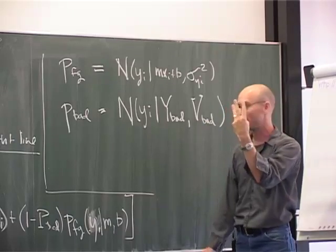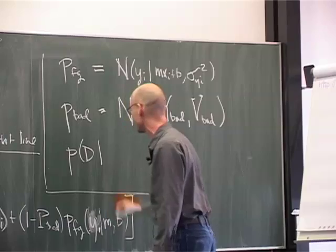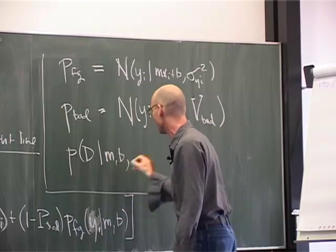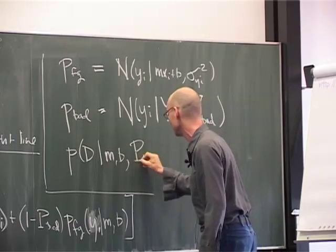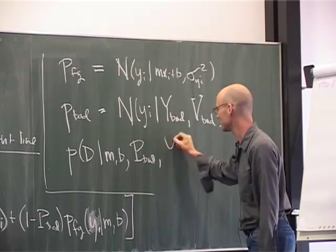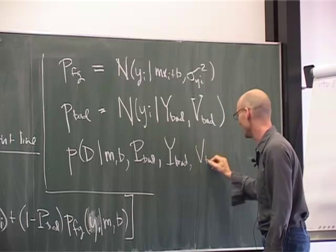Now I've added three parameters. So now, in the end, the probability of my data is going to be given not just M and B, but also three more parameters: this overall amplitude P bad, and then this mean Y bad, and this variance V bad.